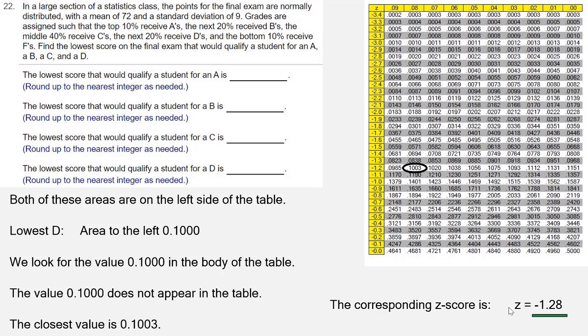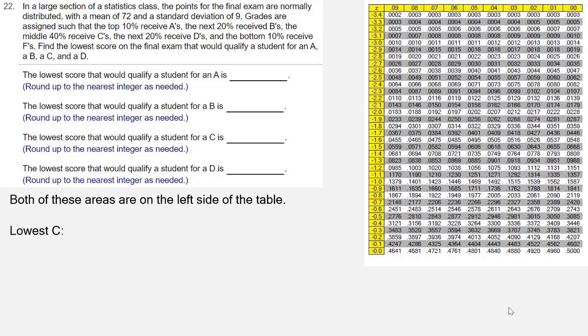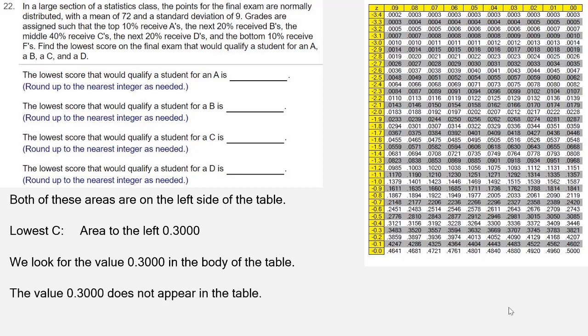For the lowest C, the area to the left is 0.300. So we look for that in the body of the table. And again, that one's not in the table. The closest value to it is 0.3015. The Z-score for 0.3015 is negative 0.52.